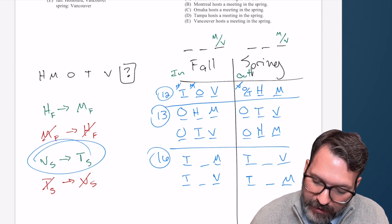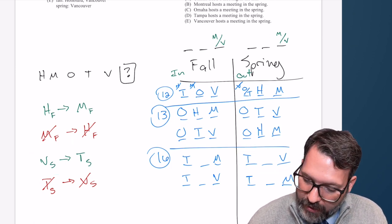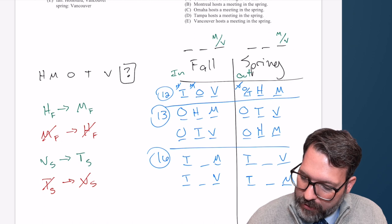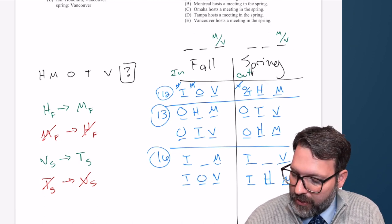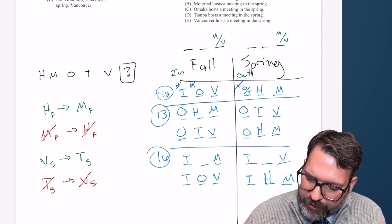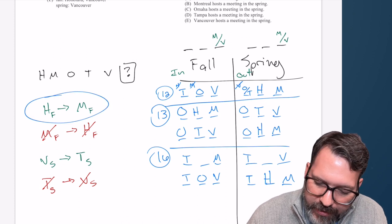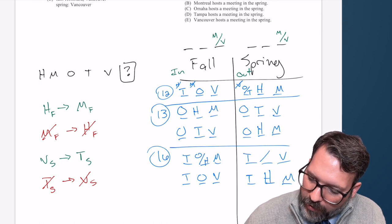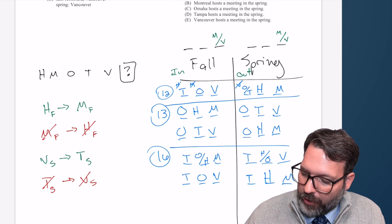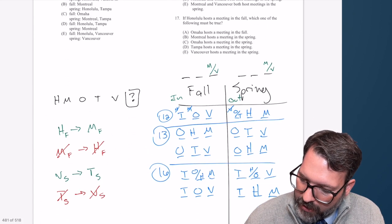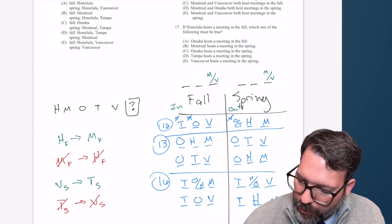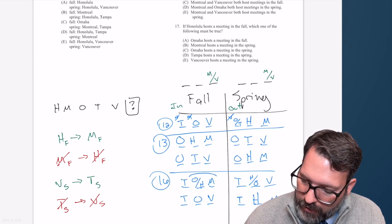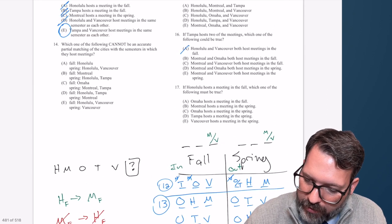We can say if M is not in the fall, H cannot be in the fall — that contrapositive applies normally. So where M is in the spring, H would also have to be in the spring, and O would have to be in the fall. In the first scenario with M in the fall, H doesn't have to be in the fall — we can't go backwards on the arrow — so it's a coin flip: either O in the fall with H in the spring, or H in the fall with O in the spring. The answer is B — M and O both host meetings in the fall.